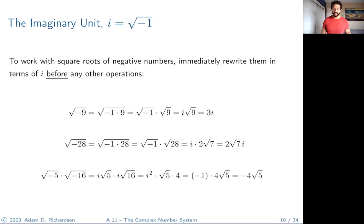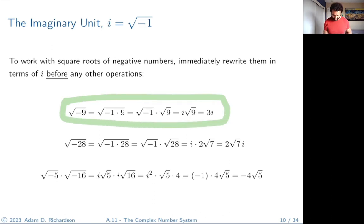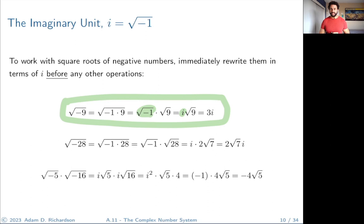When working with square roots of negative numbers, the first thing you must do is write it in terms of i before doing anything else. For example, √(−9) = √(−1 · 9) = √(−1) · √9 = i · 3 = 3i. Always pull the i out first.